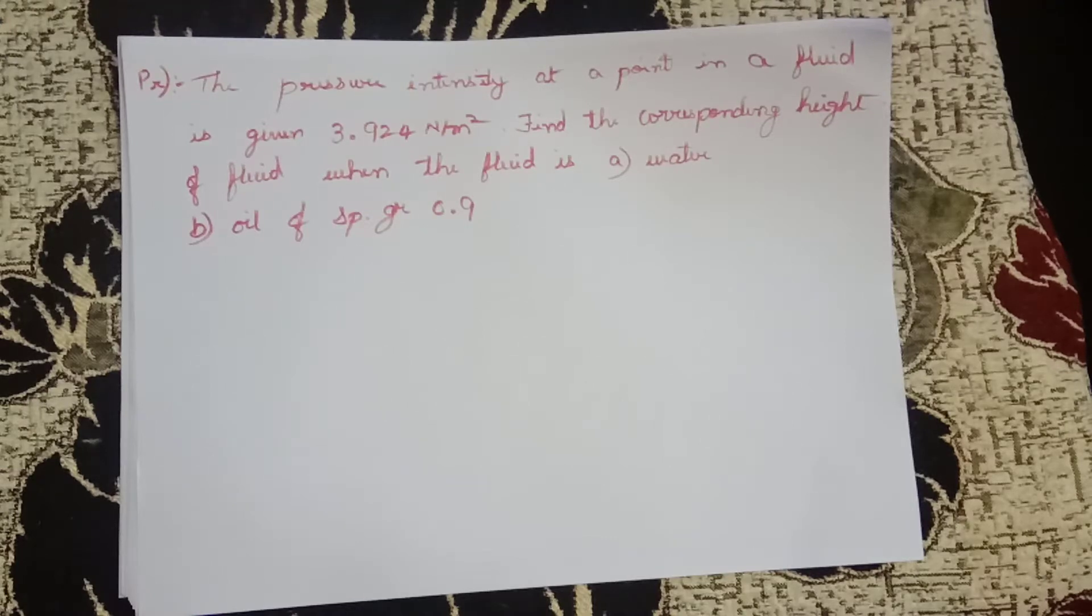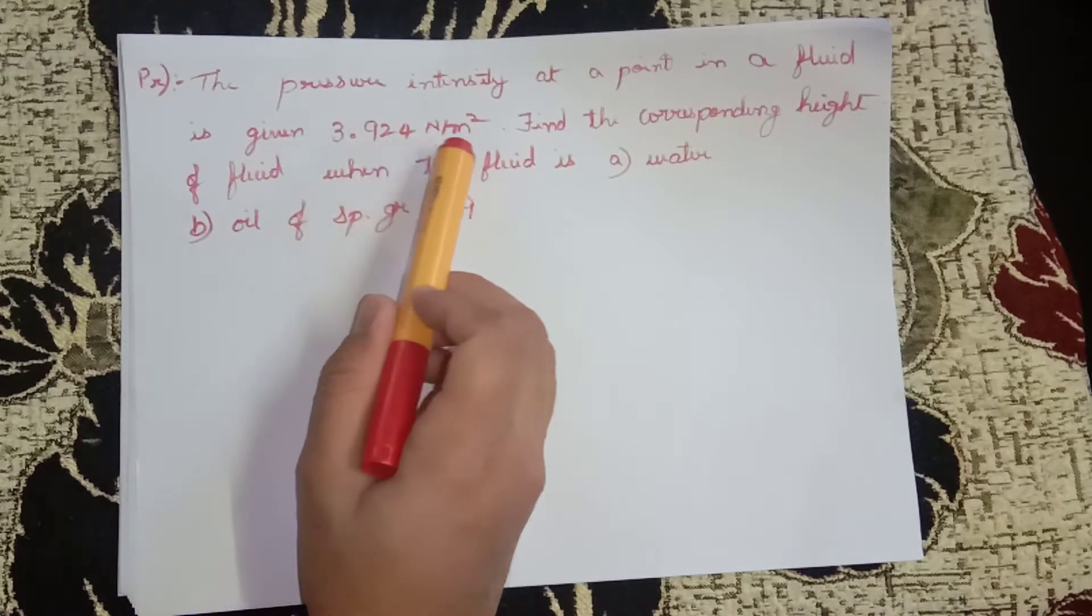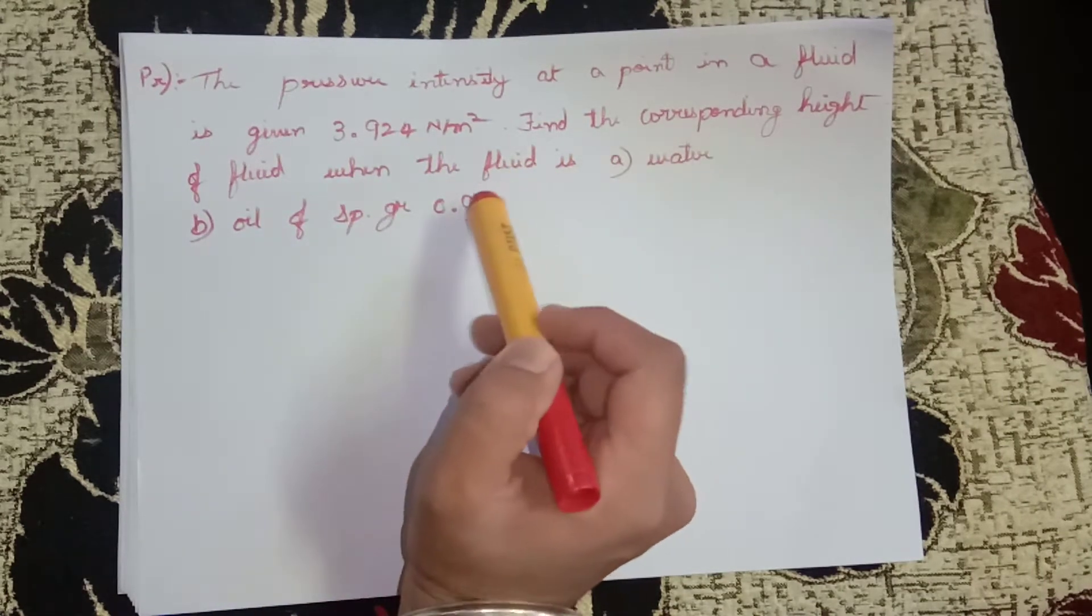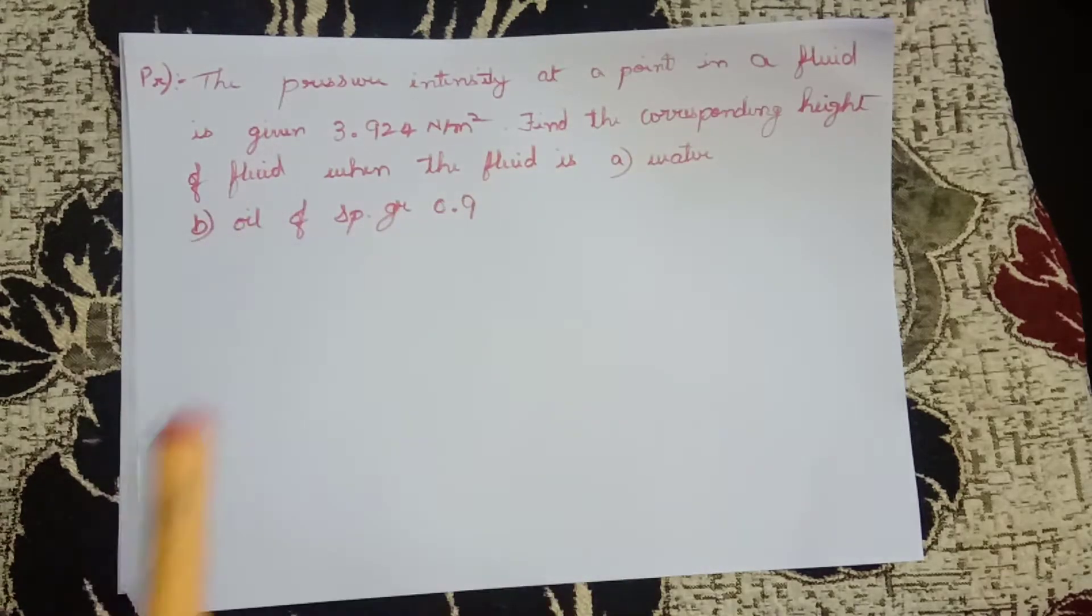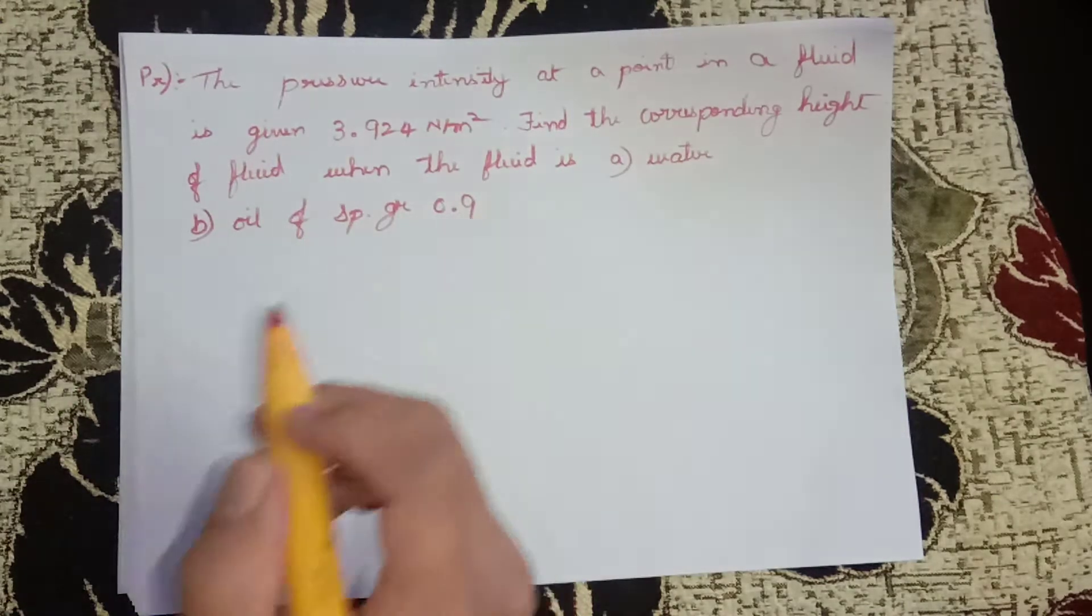Hello friends, welcome to my channel. Today we will take up another problem on pressure and its intensity. The pressure intensity at a point in a fluid is given by 3.924 newton per meter square. Find the corresponding height of the fluid when the fluid is water and when the fluid is oil of specific gravity 0.9.